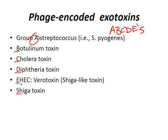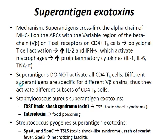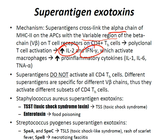Moving on to superantigen exotoxins. The mechanism by which these work is: superantigens cross-link the alpha chain of the MHC2 complex on antigen-presenting cells with the variable region of the beta chain on T-cell receptors on CD4 T-helper cells, which leads to polyclonal T-cell activation, increased IL-2 production, and increased interferon gamma, which activates macrophages.